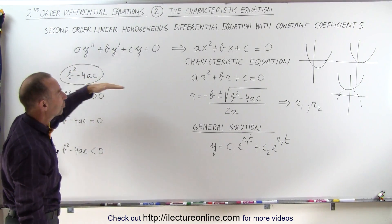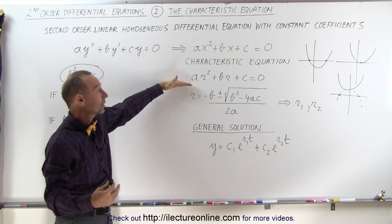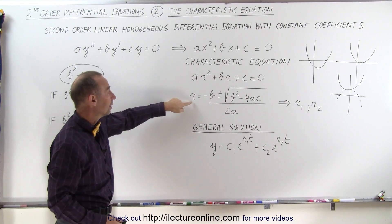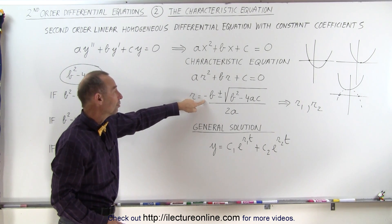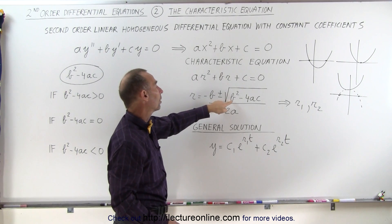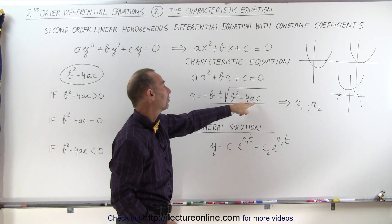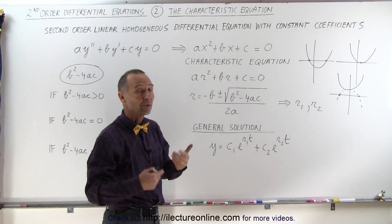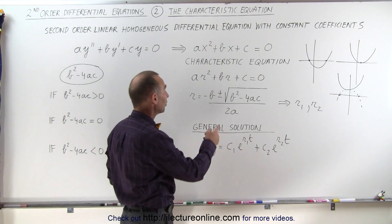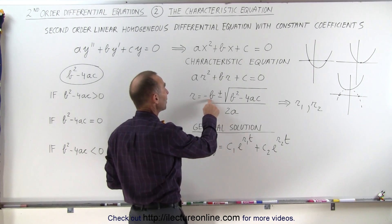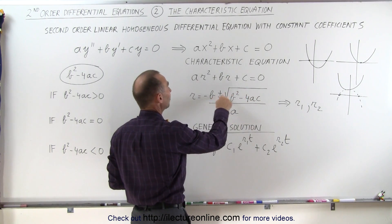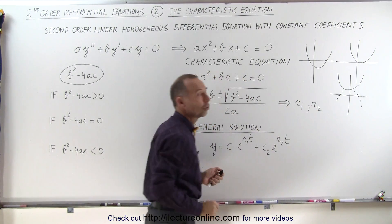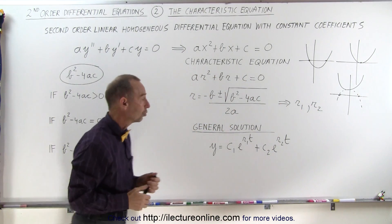Now if we solve this just like we solve a quadratic equation in algebra, we can say that R is equal to negative B plus or minus the square root of B squared minus 4AC, divided by 2A. When we solve for R we'll have two values: negative B plus this, and negative B minus this — giving us two roots.